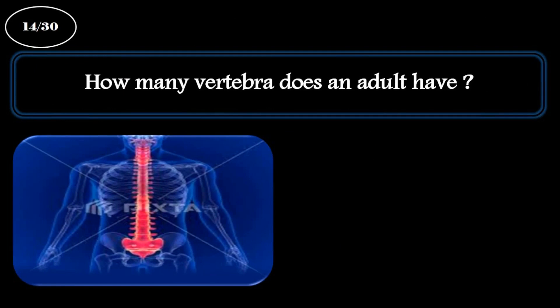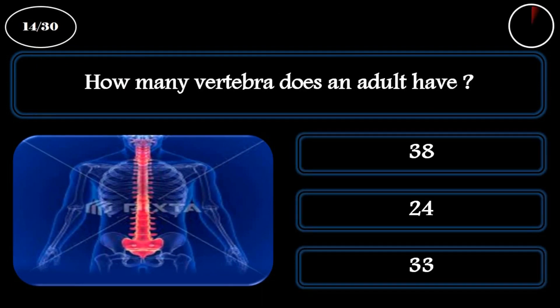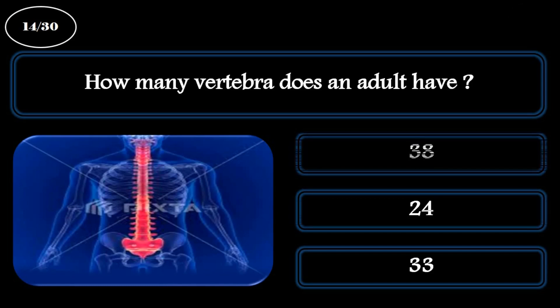Question 14. How many vertebrae does an adult have? A: 38. B: 24. C: 33. The correct answer is 33.